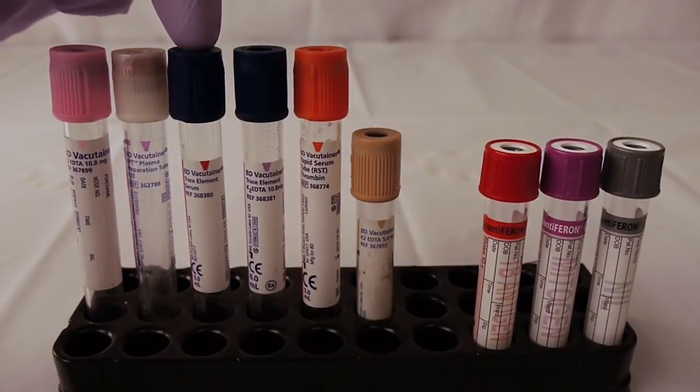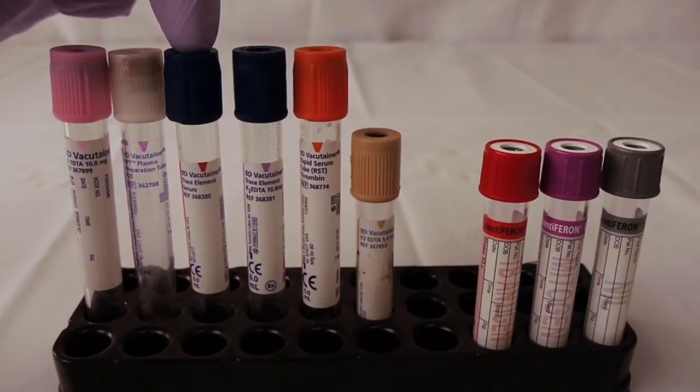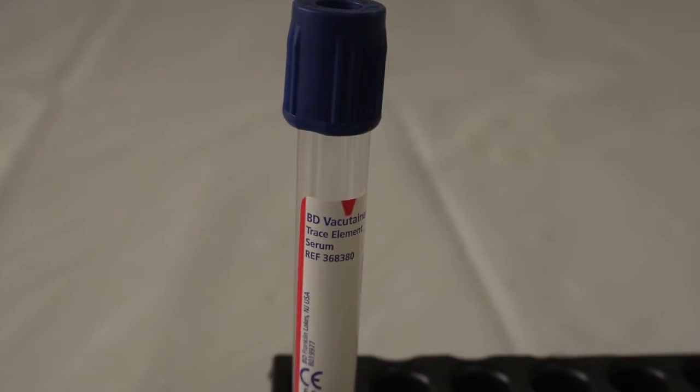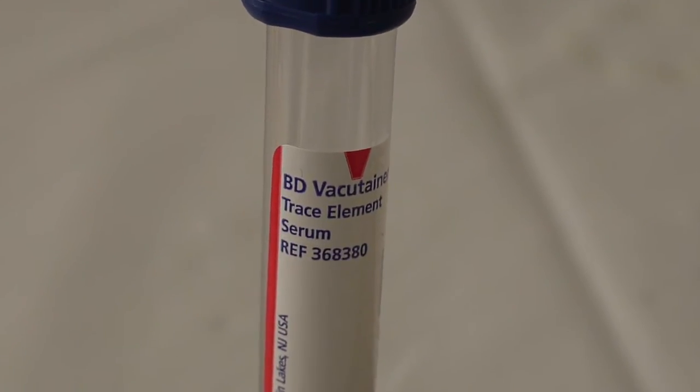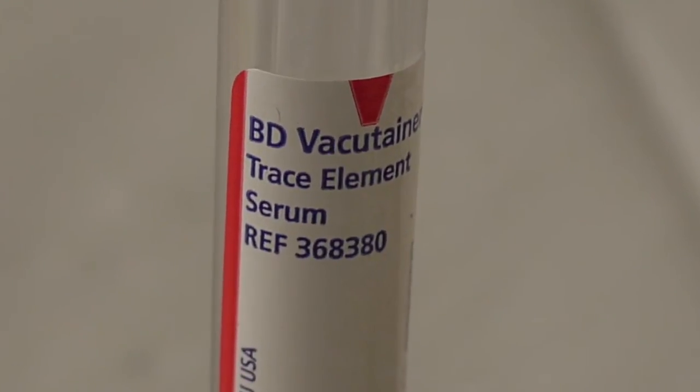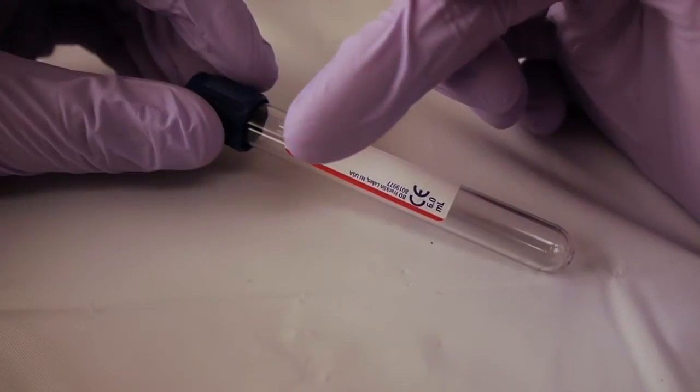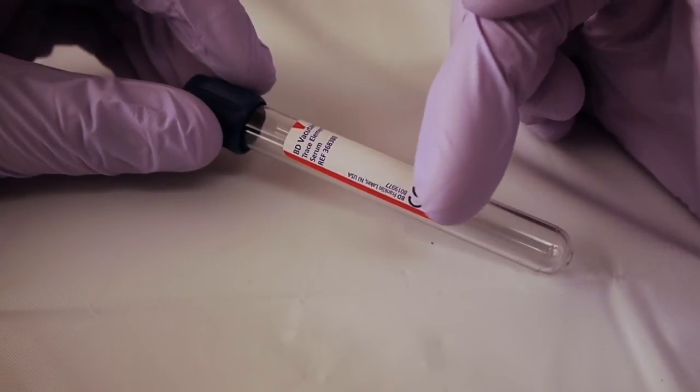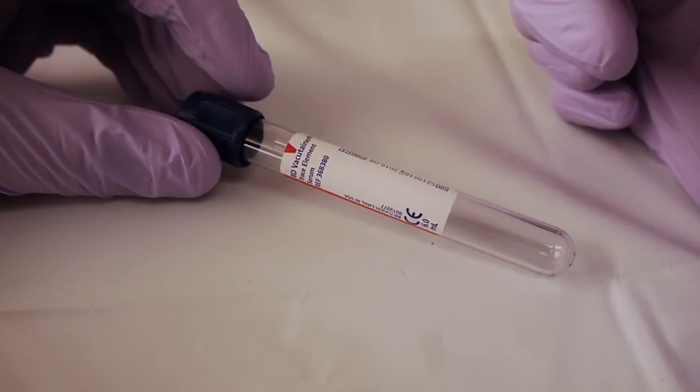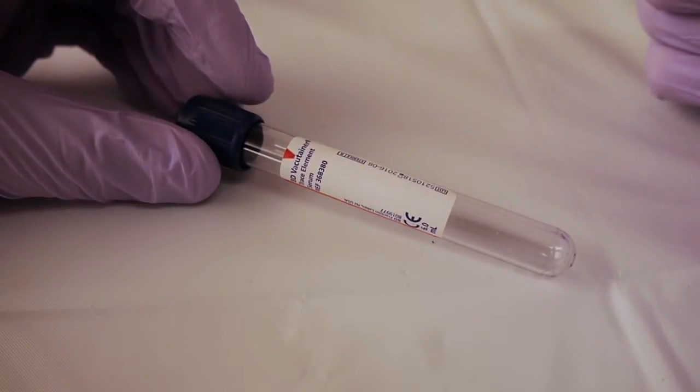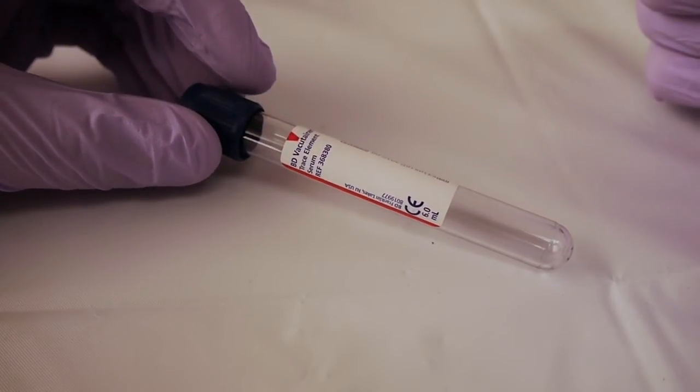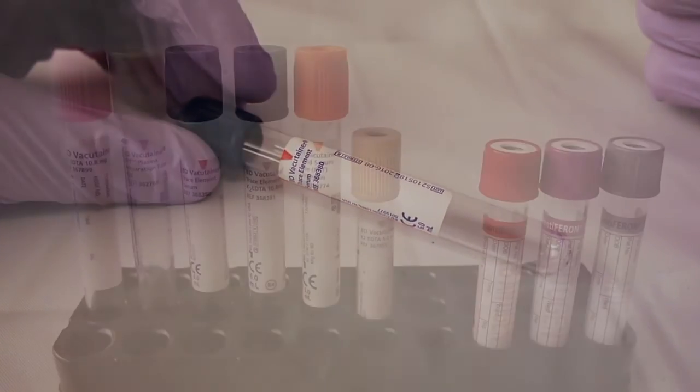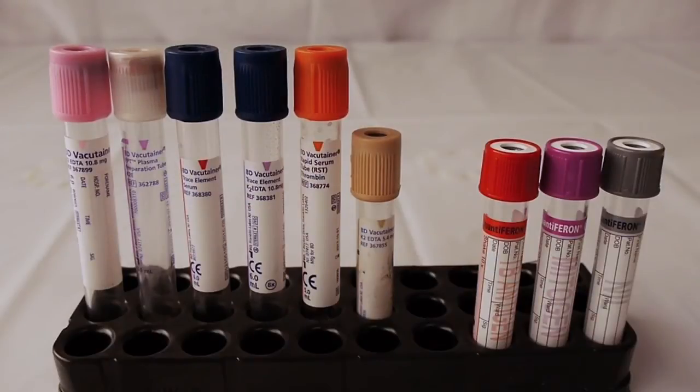The next tube is the Royal Blue Tube. This tube is used for trace elements, toxicology, and nutritional studies. This tube, if you look carefully on the left-hand side, it has a red stripe that goes down the label.